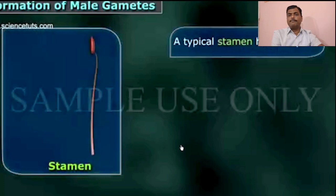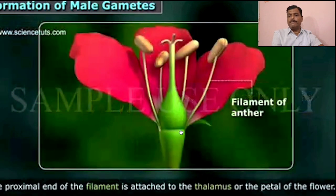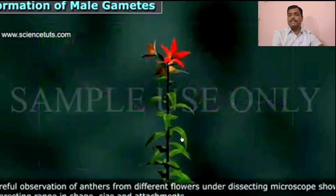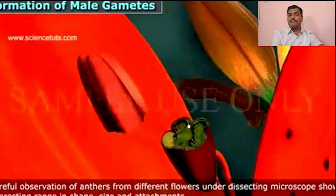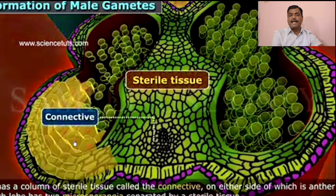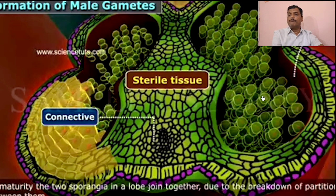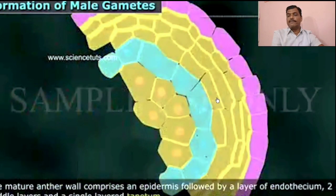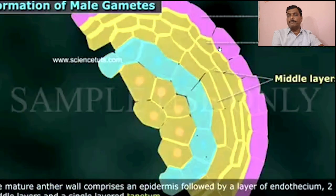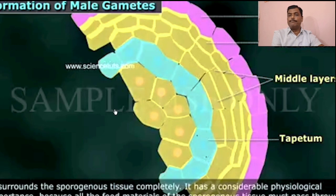We will now see all these parts with the help of an animated structure. This is the stamen, consisting of filament and the anther. In the flower, the filament gets attached to the thalamus. This is the internal structure of the anther with the four pollen sacs and the different types of layers. This is the sterile tissue — the connective — which connects the two anther lobes with each other. These are the pollen grains or microspores present in the pollen chamber. The outermost layer is the epidermis, then the single layer endothecium, two to three layers of middle layers, and the tapetum surrounding the pollen chamber.